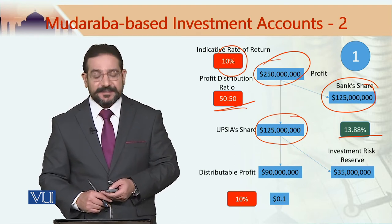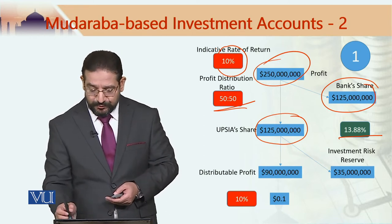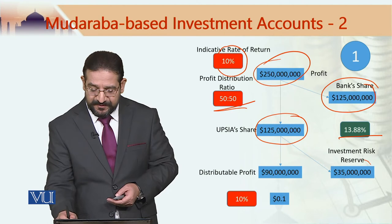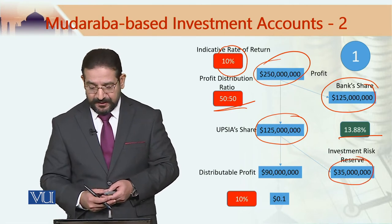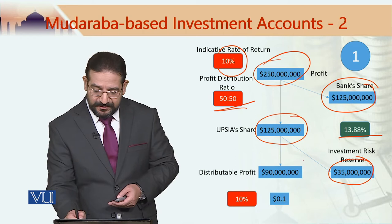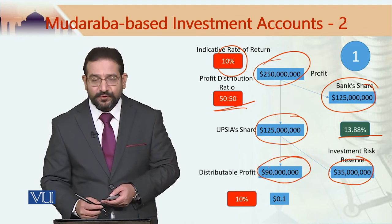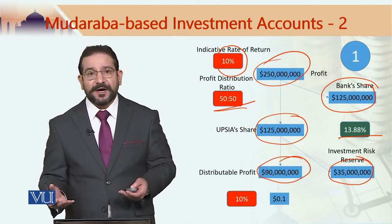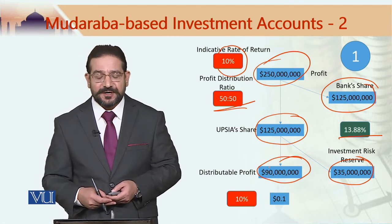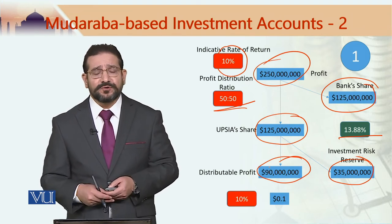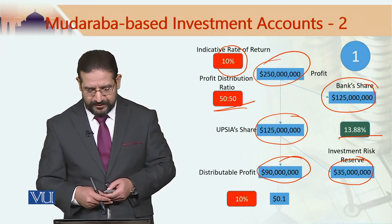In this case the bank would be putting 35 million into the investment risk reserve, and the remaining 90 million would be distributed amongst the unrestricted profit sharing investment account holders, which is equal to the indicative rate of return of 10 percent.